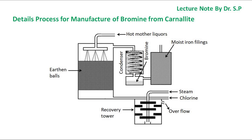In the detailed process for manufacture of bromine from carnallite, carnallite is dissolved in water and the solution is concentrated and cooled to separate crystals of potassium chloride and magnesium dichloride. The hot mother liquor is allowed to flow down through a tower packed with earthenware balls. A current of chlorine is passed from the bottom, displacing bromine which is carried upwards by steam. The less soluble chlorides separate out, leaving behind the more soluble bromide as mother liquor.